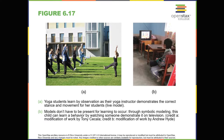Bandura identified three kinds of models: live, verbal, and symbolic. A live model demonstrates a behavior in person, as when Ben stood up on his surfboard so that Julian could see how to do it. A verbal instructional model does not perform the behavior, but instead explains or describes the behavior, as when a soccer coach tells his young players to kick the ball with the side of the foot, not with the toe. A symbolic model can be a fictional character or real people who demonstrate behaviors in books, movies, television shows, video games, or internet sources.